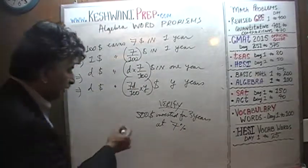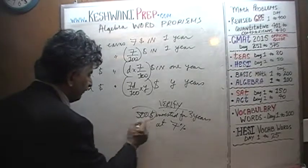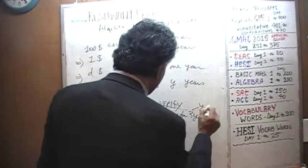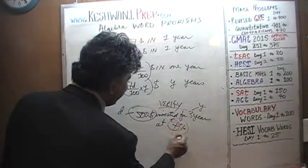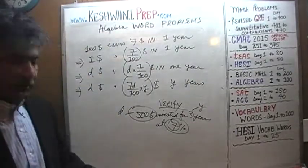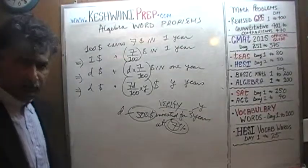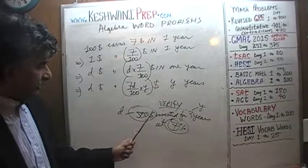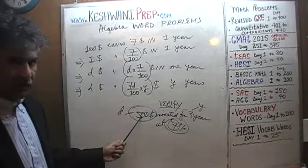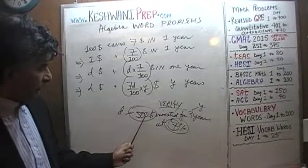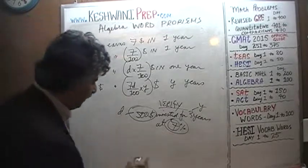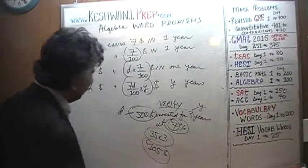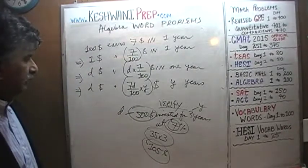$500 is D dollars, 3 years is Y years, and 7% is the given rate. Starting the story: $100 invested at 7% earns $7. Therefore $500 earns 5 times $7, which is $35 in one year. For 3 years, it earns $35 times 3. We know $30 times 3 is $90, and $90 plus $15 is $105. If our formula gives $105, we've done the right work.